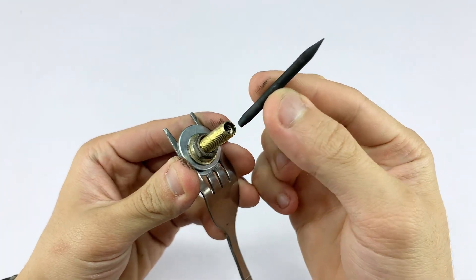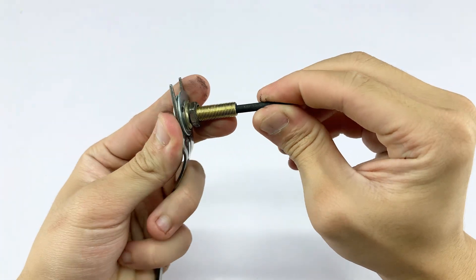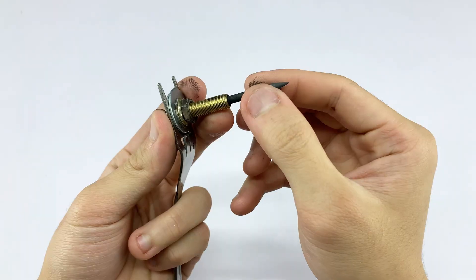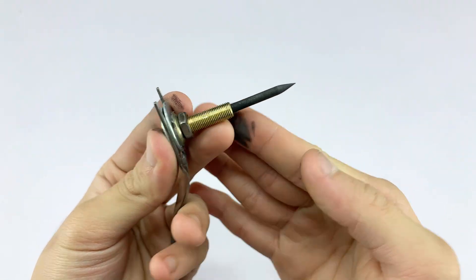Next, I'm carefully inserting the sharpened carbon rod into the brass tube of the tire valve that's secured in our fork. This creates a compact and ready-to-use heating probe.